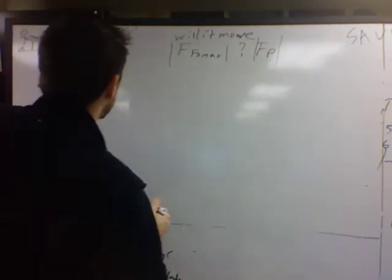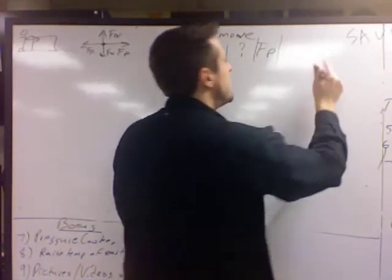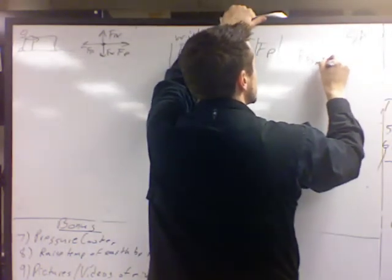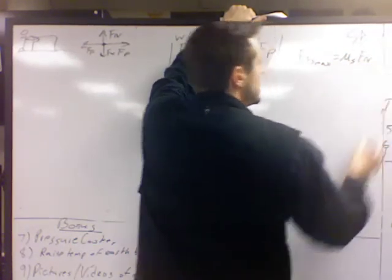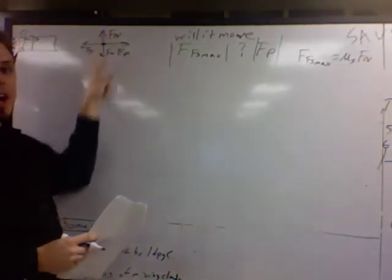So force of friction static max. Let me do that over here. Force of friction static max will equal mu sub s times the normal. To get the normal, I'll have to take a look at my free body diagram. That's in the y direction. So I'm going to sum the forces in the y direction.